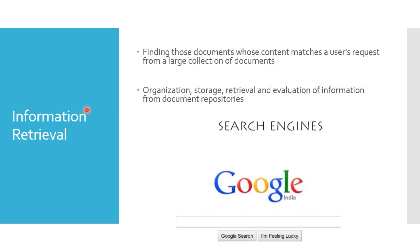Every piece of information is now at our fingertips. We commonly use Google for search. In information retrieval, when we type a query, the system has to understand the important words in that query, then match them with a repository of documents, and display the matching documents. This all relates to natural language understanding and processing.